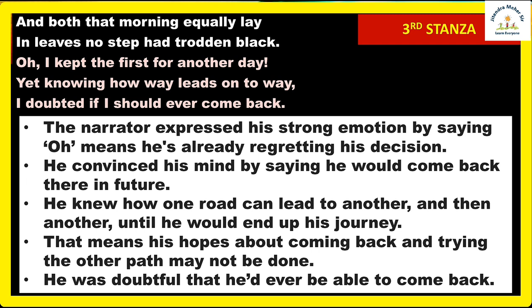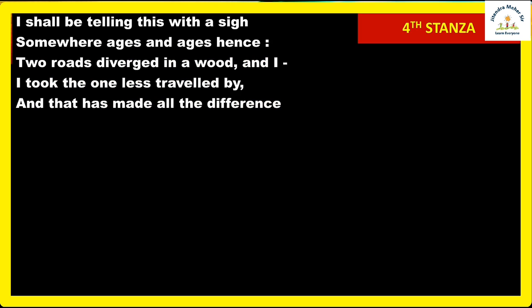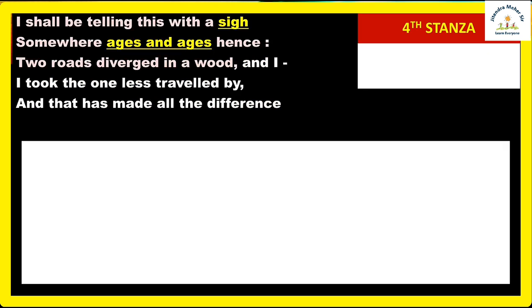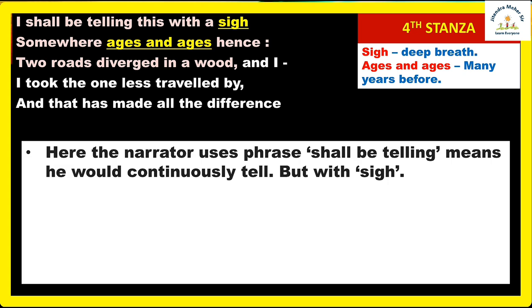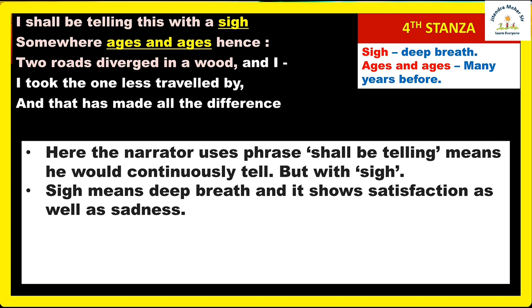Now let's see the fourth and final stanza: 'I shall be telling this with a sigh, somewhere ages and ages hence.' 'Sigh' means a deep breath. 'Ages and ages hence' means many years from now. The narrator uses the phrase 'shall be telling' — future continuous tense — meaning he will continuously keep telling this story. Whether he gains profit or suffers a loss from his decision, he will always keep telling this to others.